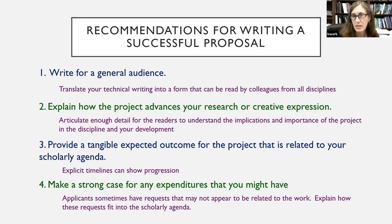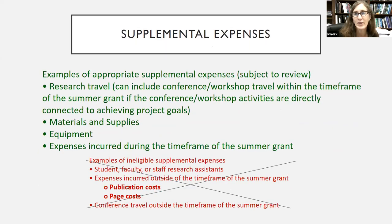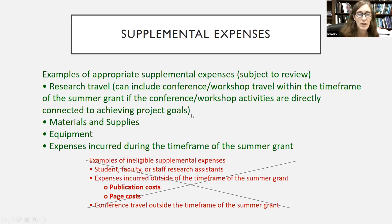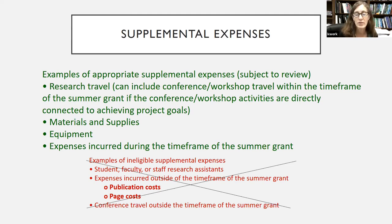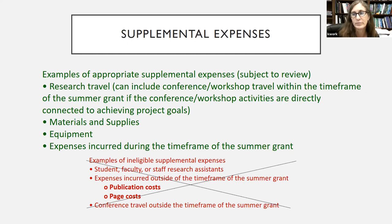We've had some questions about what expenditures could and could not be, so I found that Rosalie sent me to the FAQ page. It includes examples of appropriate expenditures and some that are not. Research travel can be included, and that could include a conference if it's in that period. You can use it for materials, supplies, and equipment. But you can't use it to pay other students, faculty, or staff as research assistants; you can't use it for publication or page costs; and you can't use it for presenting the project after the summer grant period ends.